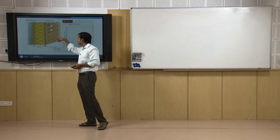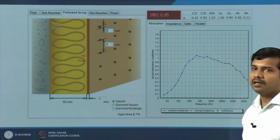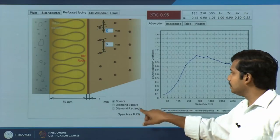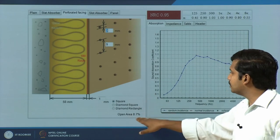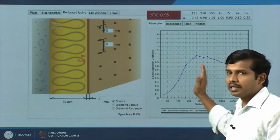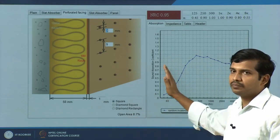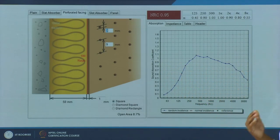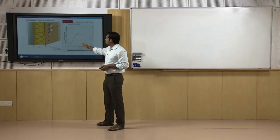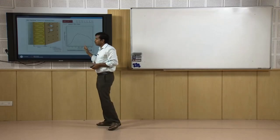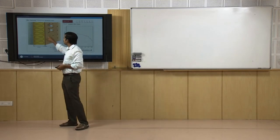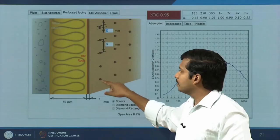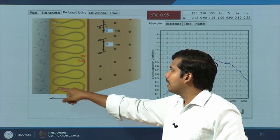In this example, the open area is around 9 percent. If you increase this open area, the material gives better absorption in the low frequencies. It is a variable system — you need to understand how the material behaves with three different parameters: spacing, diameter, and backing.